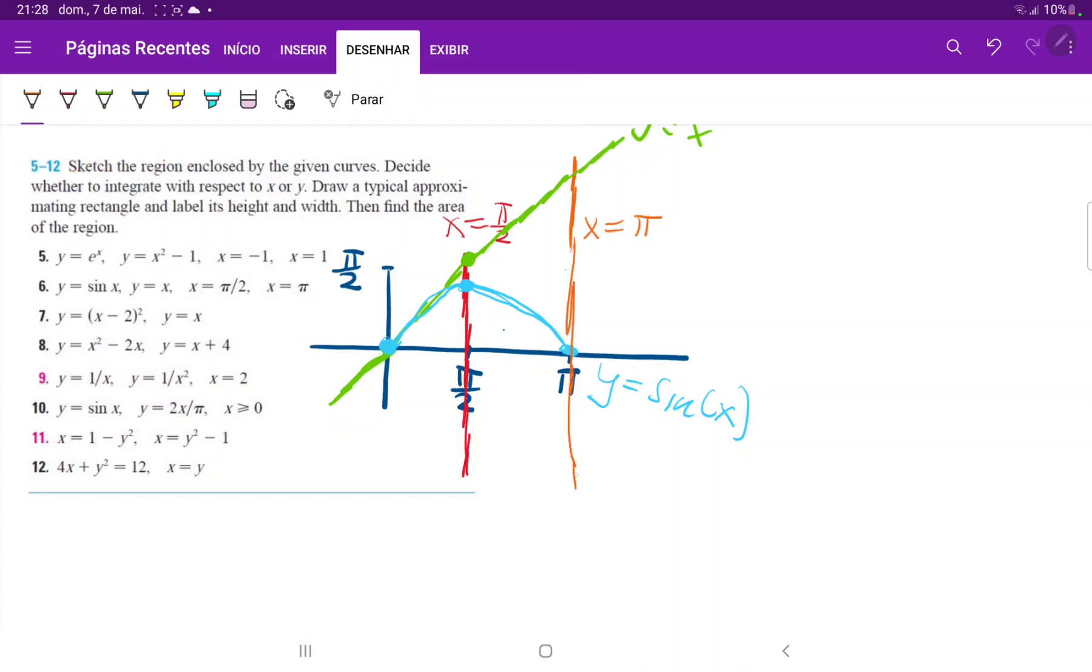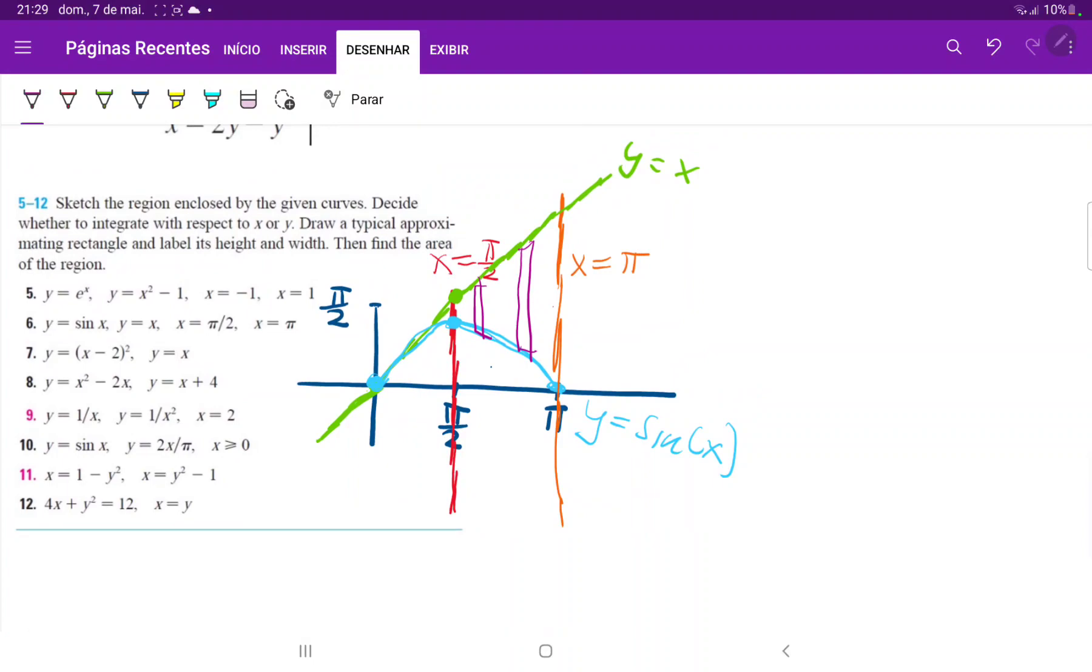So if I just do vertical rectangles and I draw them like so, we can see that no matter where I draw them, I'm always going to have the same upper function, which is y equals x, and the same lower function, y equals sine of x. So this means that I can express things as a single integral. So this is the way for us to go.